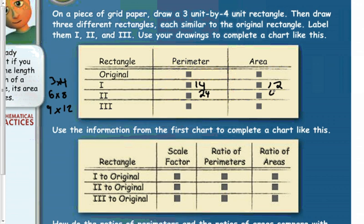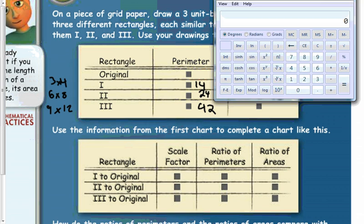The area of the 6 by 8 is 48, so the area didn't double — it quadrupled. For the 9 by 12, the perimeter is 9 plus 9 plus 12 plus 12, which equals 42. And 9 times 12 is 108.